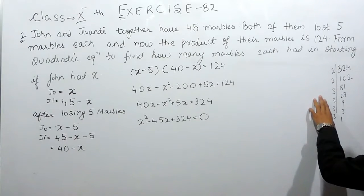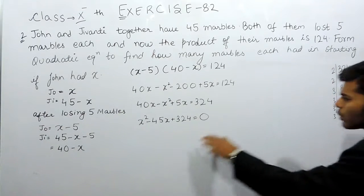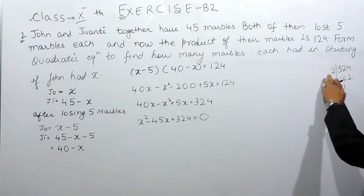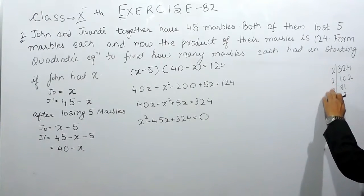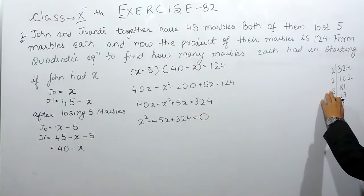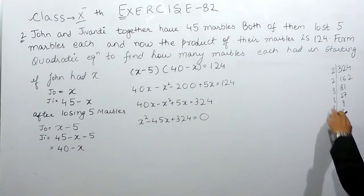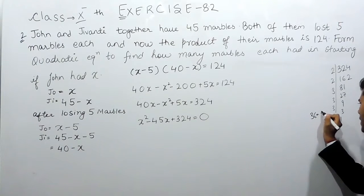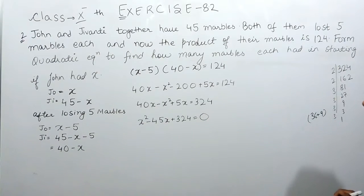Using these prime factors we have to make this equals to 45. This can be 2 multiplied by 2 is 4. 4 multiplied by 3 is 12 and 12 multiplied by 3 is 36 and this is 9. So we can write this like 36 plus 9 which will be equals to 45.